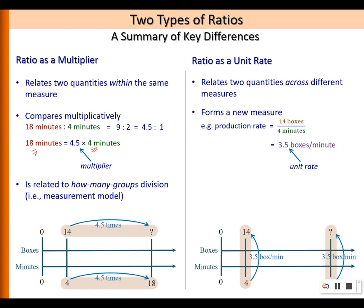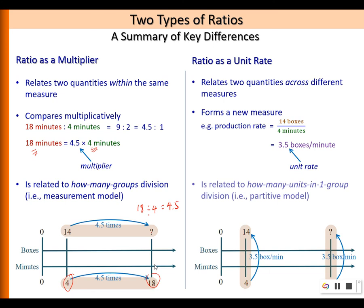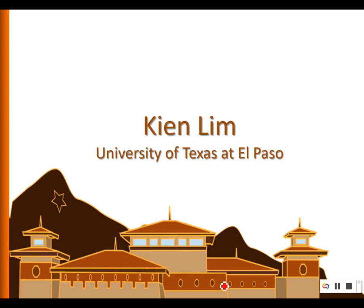In terms of division, ratio as a multiplier is related to the 'how many groups' interpretation — quotative or measurement model. 18 divided by 4 gives 4.5 groups of 4 minutes in 18 minutes. Ratio as a unit rate is related to the 'how many units in one group' interpretation — the partitive model. Thank you.